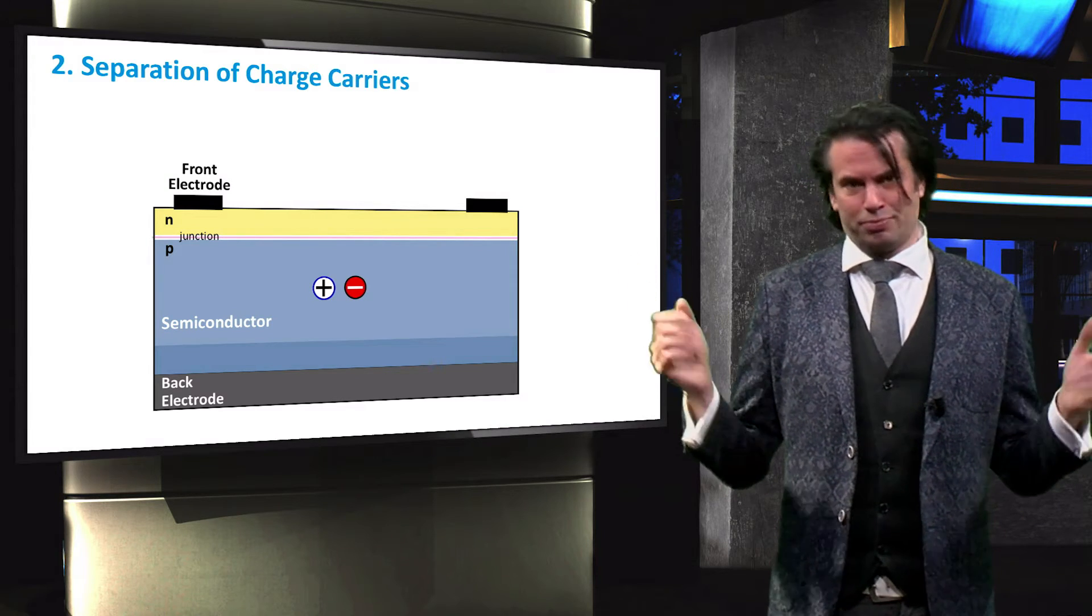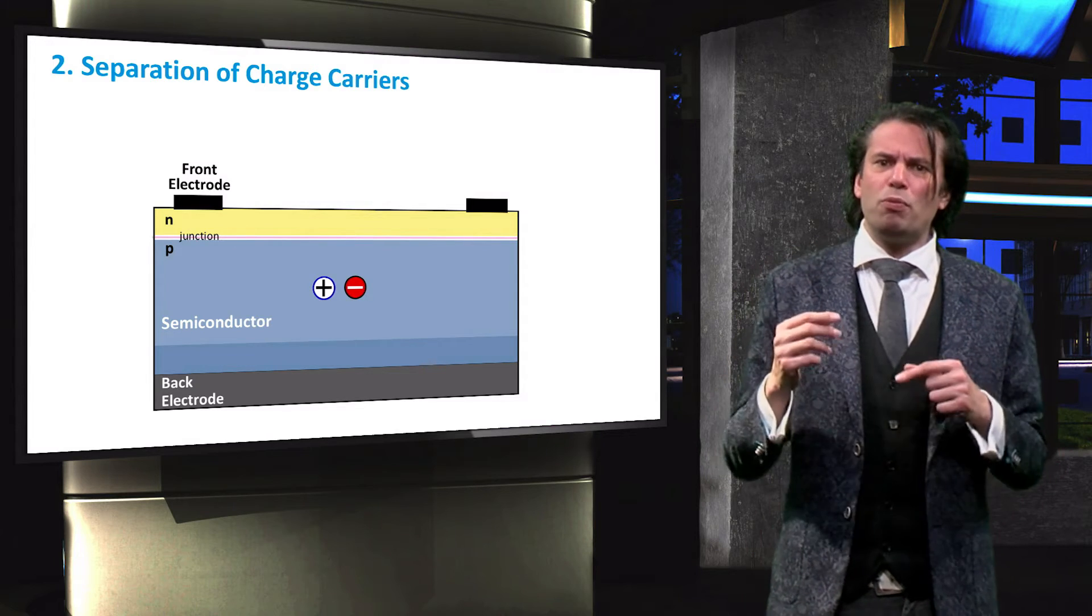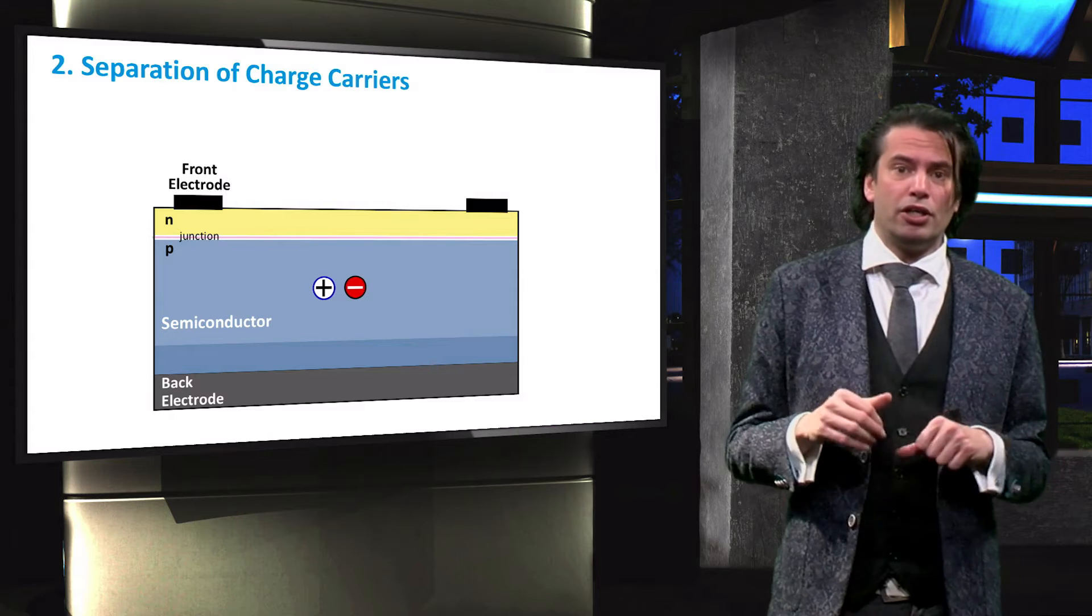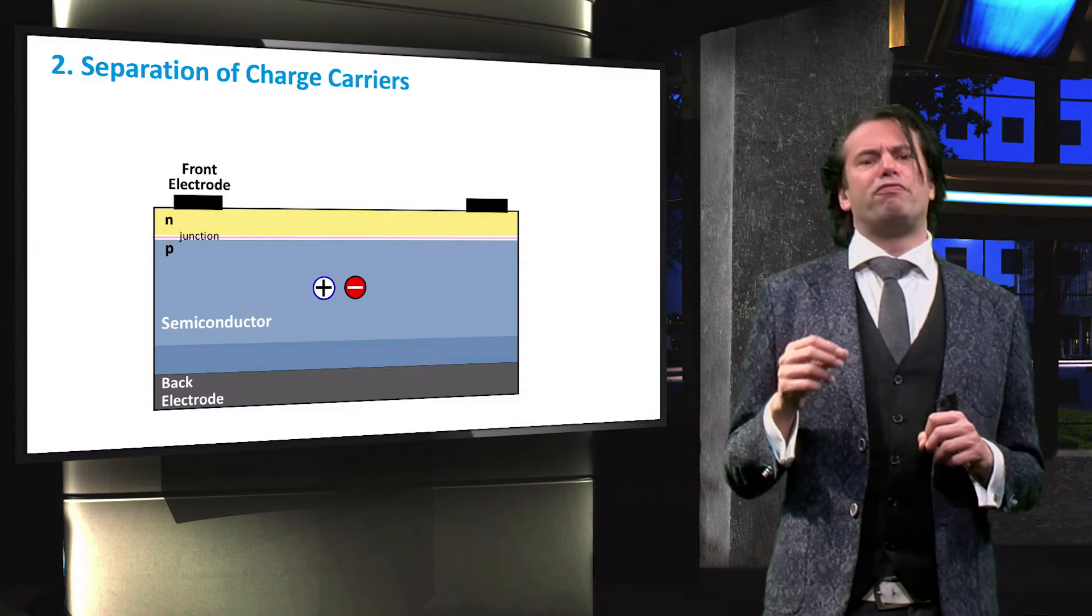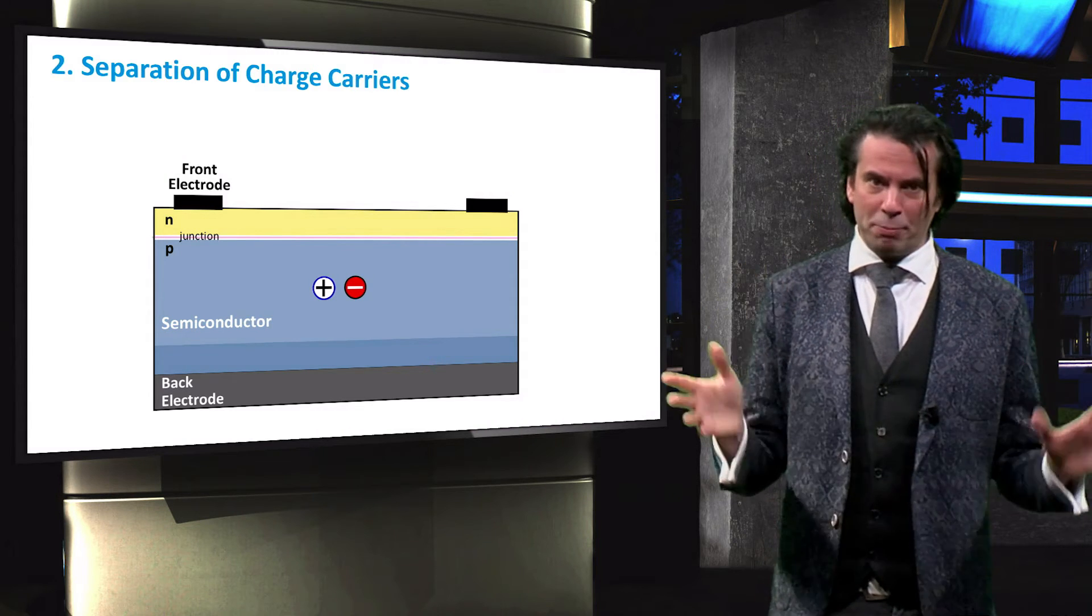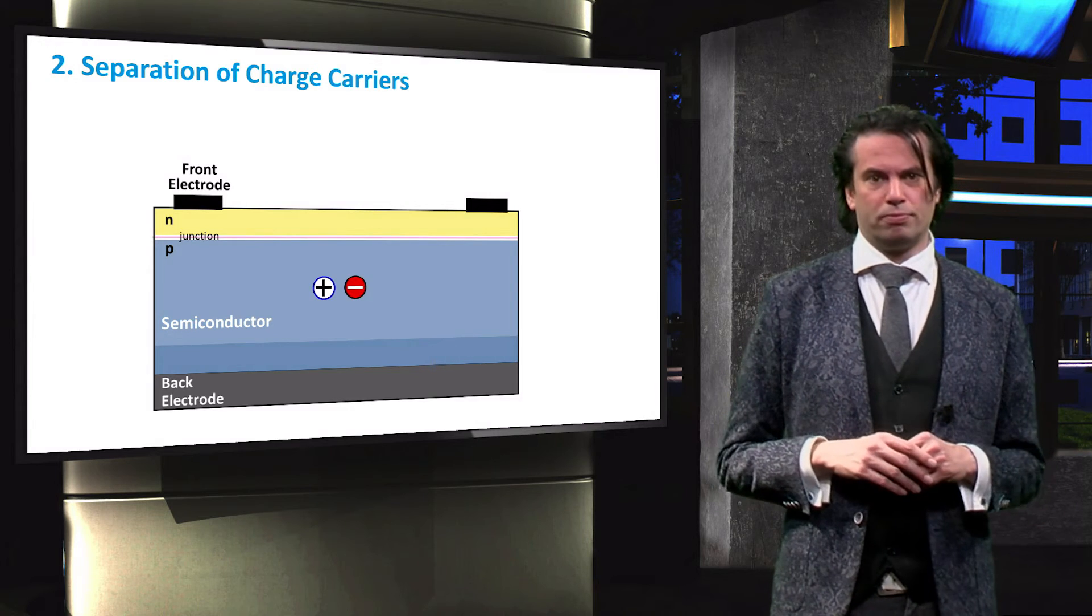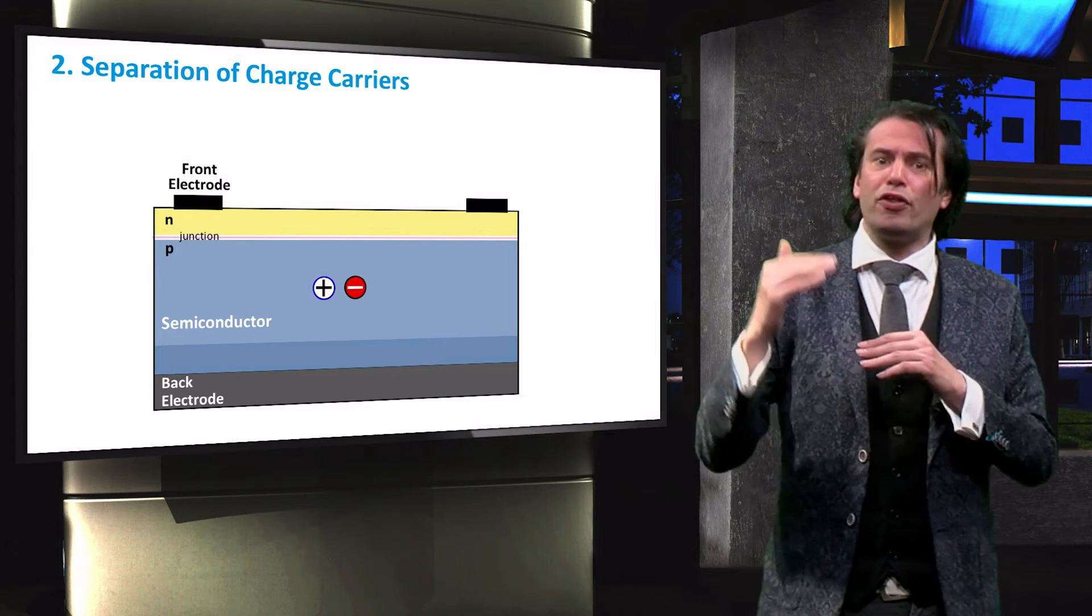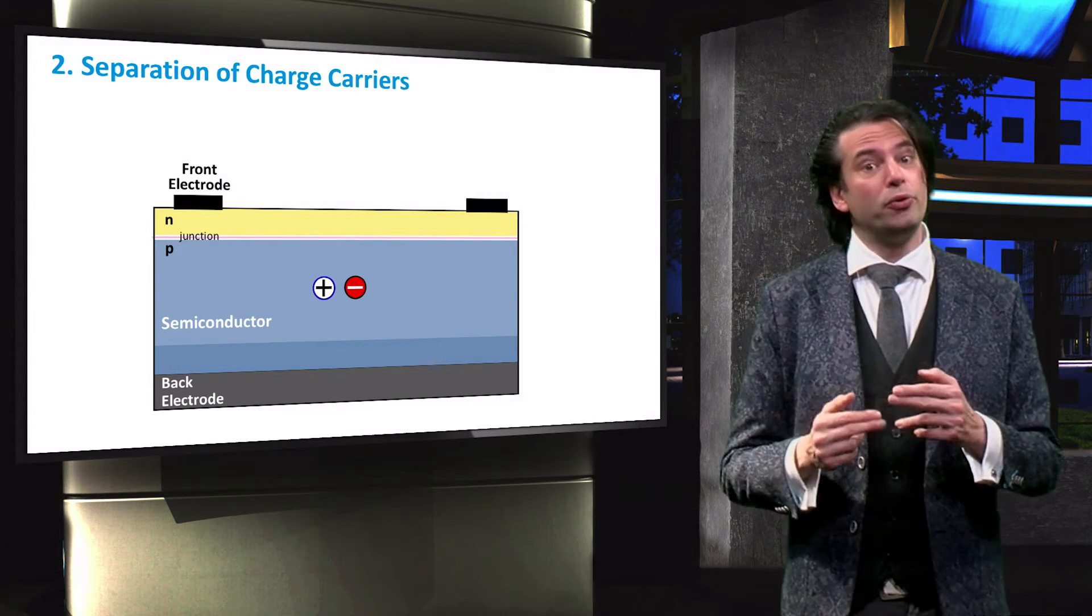How do we do this? Once carriers are generated in a solar cell, they will move around due to various processes such as diffusion, random motion and drift. In order to separate the photo-generated charge carriers, semi-permeable membranes must be present on both sides of the absorber. This ensures that the electrons can only flow out through one membrane and holes can only flow out through the other membrane.